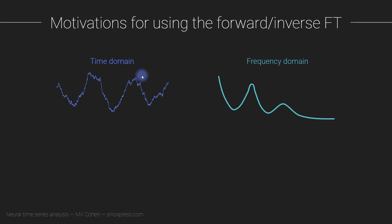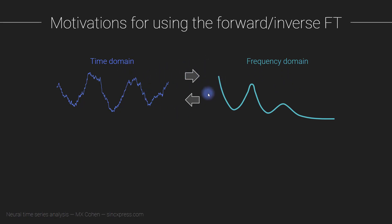This tells us that we can go from the time domain to the frequency domain via the forward Fourier transform, and from the frequency domain back to the time domain via the inverse Fourier transform. Both directions are perfect, lossless transformations. We could keep cycling between the time domain and the frequency domain indefinitely — for a thousand years — and never lose an iota of information.